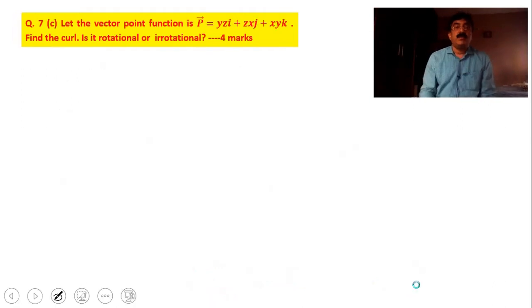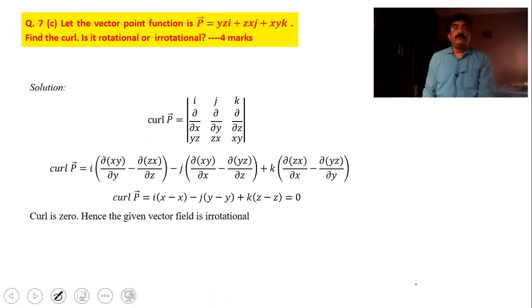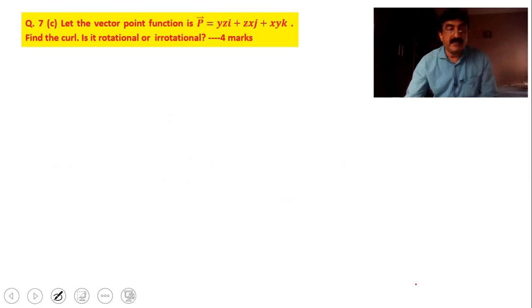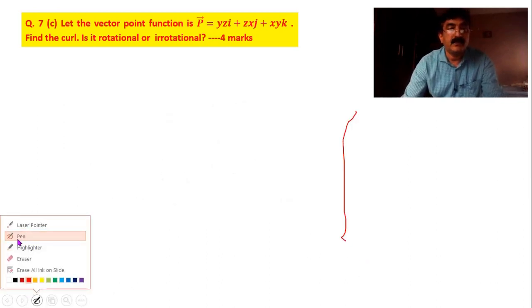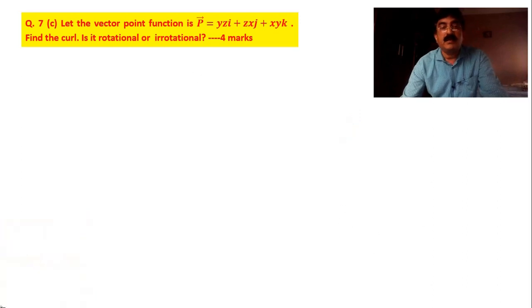I move on to the next question. Now it is a numerical problem. Let the vector point function be P = yzi + zxj + xyk where i, j, k are all unit vectors. Find the curl.